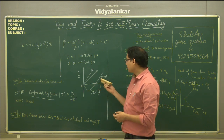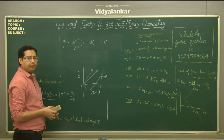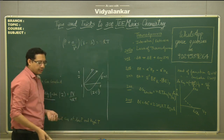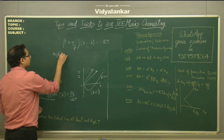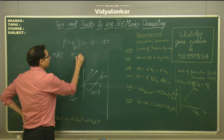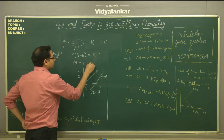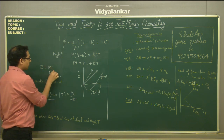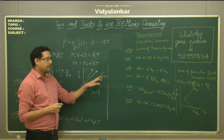Let's try to understand why Z is greater than 1 at high pressure. Consider one mole of gas, so n = 1. At high pressure, the value of P is much greater than a/b², so the a/b² term can be neglected. The equation becomes P(V - b) = RT. Rearranging: PV = Pb + RT. Dividing both sides by RT gives Z = PV/RT = 1 + Pb/RT. So at high pressure, Z is more than 1.